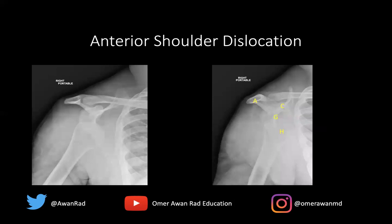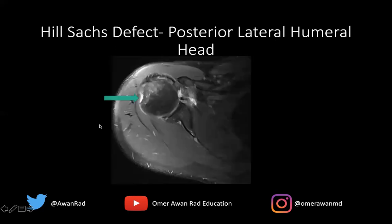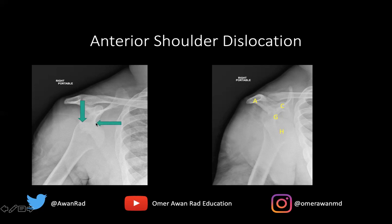I want to show what this looks like on an x-ray, which is probably what you're used to looking at. On this frontal view of the shoulder, we can see that the humeral head is inferiorly displaced with respect to the glenoid — this is the humeral head, this is the glenoid, and it's not articulating with the glenoid. The Hill-Sachs lesion is here: the posterior lateral aspect of the humeral head impacts along the anterior inferior glenoid, giving you the characteristic Hill-Sachs and Bankart lesions.